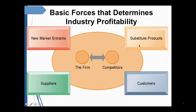The threat of substitute products limits the profit potential of an industry because they limit the prices companies in an industry can charge. For example, the airfare from Singapore to Kuala Lumpur is expected to be lower given the proposed high-speed train connecting the two cities. Bargaining power of buyers can influence the profitability of an industry since they can price it down or demand higher quality or more services by bargaining among competitors. Buyers have more bargaining power when they purchase a large volume relative to the sales of the supplier. For example, travel agencies have to price their tour packages competitively as consumers tend to compare for the best deal, and companies will have to constantly design new itineraries or offer unique services to remain profitable.